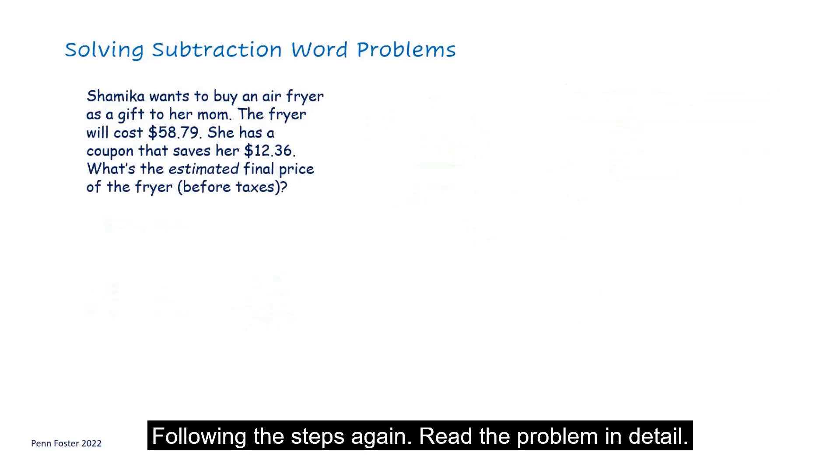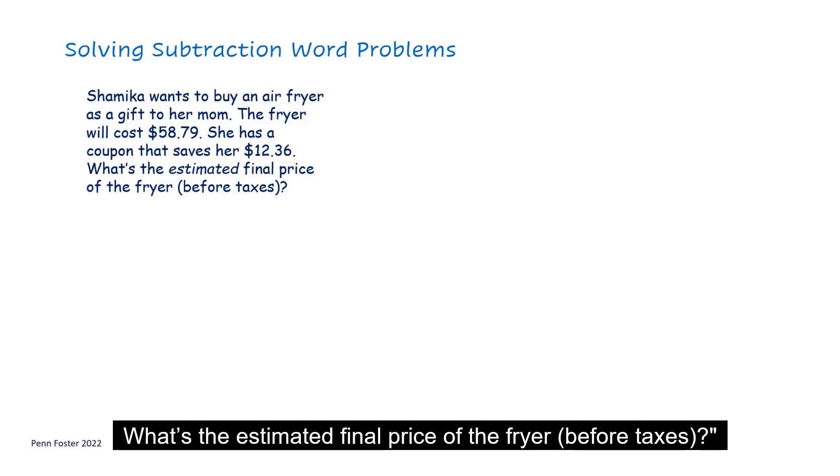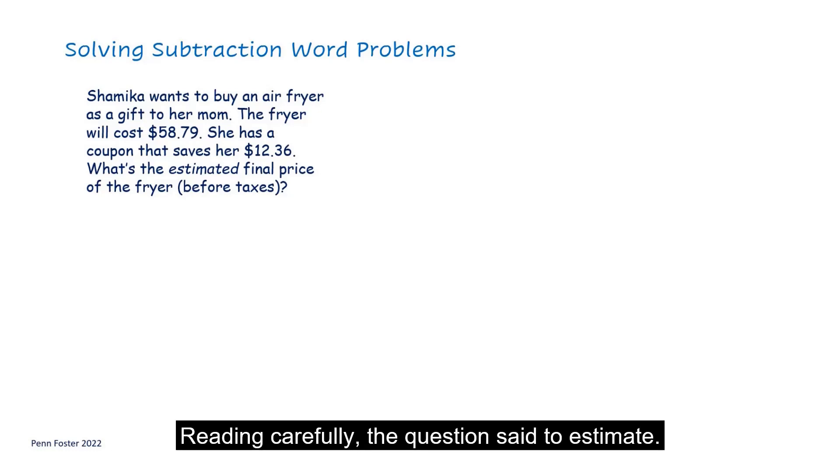Following the steps again, read the problem in detail. Shamika wants to buy an air fryer as a gift to her mom. The fryer will cost $58.79. She has a coupon that saves her $12.36. What's the estimated final price of the fryer before taxes? Reading carefully, the question said to estimate. Next, view the problem as a picture.